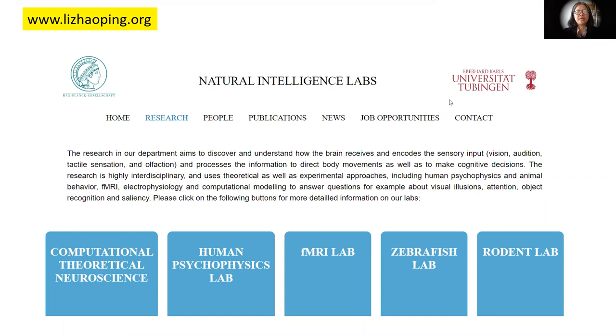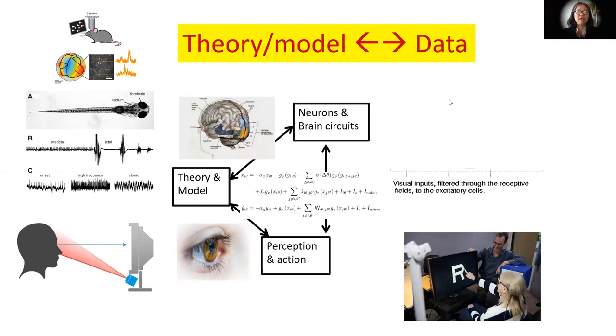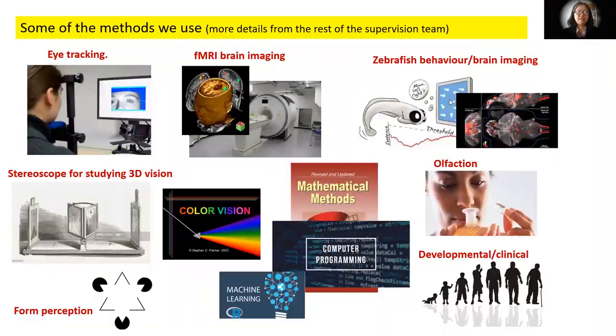We study the computer in our brain, theoretically and experimentally, by recording neurons in our brain, observing intelligent behavior in humans and animals, and by making models and theoretical hypotheses.